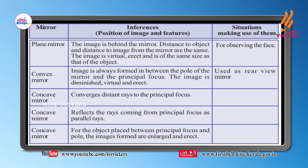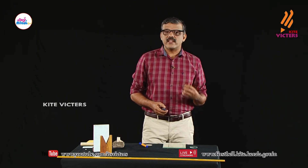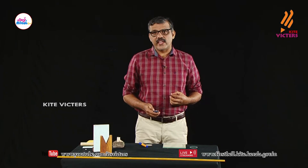For a convex mirror, the image is always formed between the pole and the principal focus. The image is diminished, virtual, and erect. Because of these properties, we can use a convex mirror as a rear view mirror in vehicles.